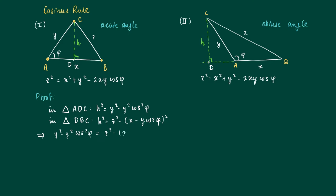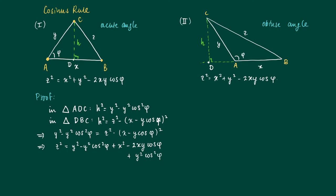So now we have two expressions for H squared. Setting them equal, we get Y squared minus Y squared cosine squared phi on the right-hand side equals Z squared minus X squared minus 2XY cosine phi plus Y squared cosine squared phi. Putting terms on the other side, we get Z squared equals Y squared minus Y squared cosine squared phi plus X squared minus 2XY cosine phi plus Y squared cosine squared phi. The cosine squared terms cancel out, so we obtain Z squared equals X squared plus Y squared minus 2XY cosine phi. This is the cosine rule.